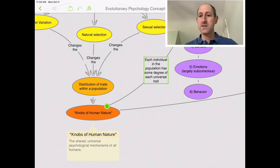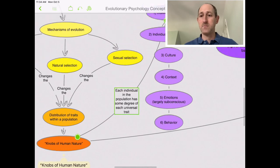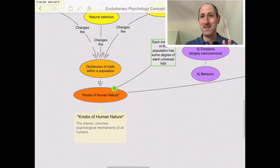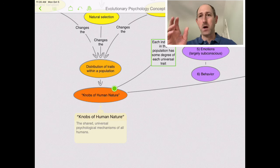And each individual in the population has some degree of the universal trait. And we talked a little bit in the last one that in terms of the expression of individual genes, that it's different, and it's different for a variety of reasons, but we all have it. It can be, that's the knob.